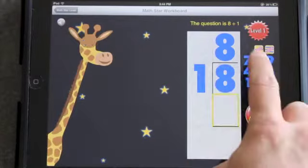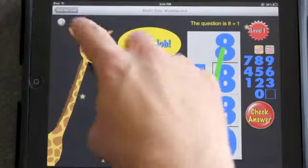1 goes into 8, 8 times. 1 times 8 is 8. 8 minus 8 is 0. Great job!